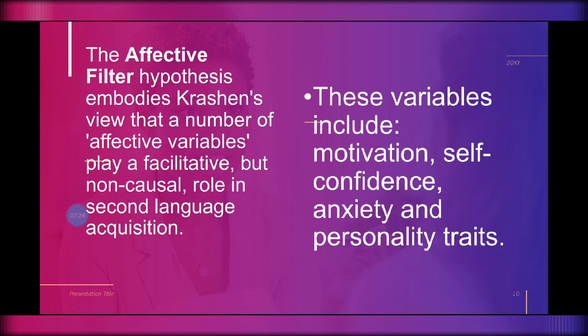These variables include motivation, self-confidence, anxiety, and personality traits. Krashen claims that learners with high motivation, self-confidence, a good self-image, a low level of anxiety, and extroversion are better equipped for success in second language acquisition. Conversely, low motivation, low self-esteem, anxiety, introversion, and inhibition can raise the affective filter and form a mental block that prevents comprehensible input from being used for acquisition. These factors play an important role in the second language acquisition of a child, especially confidence.